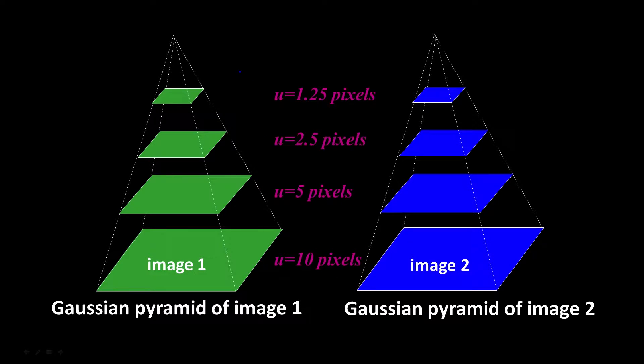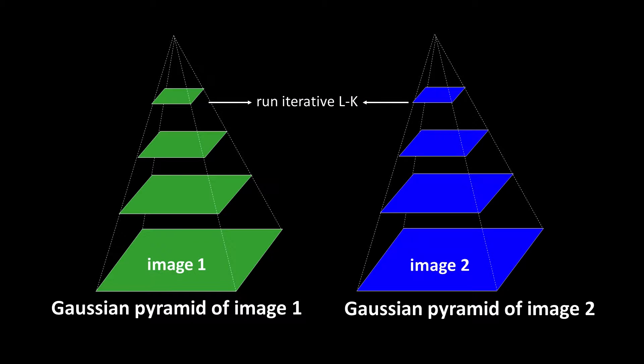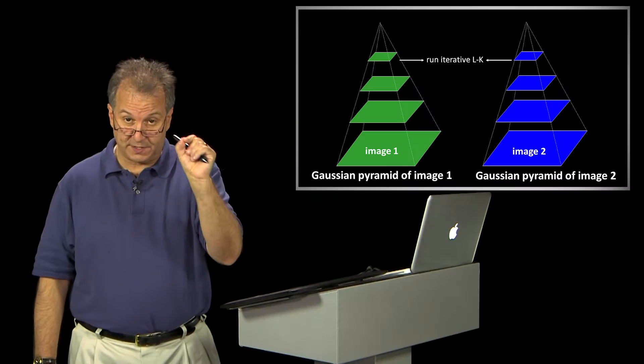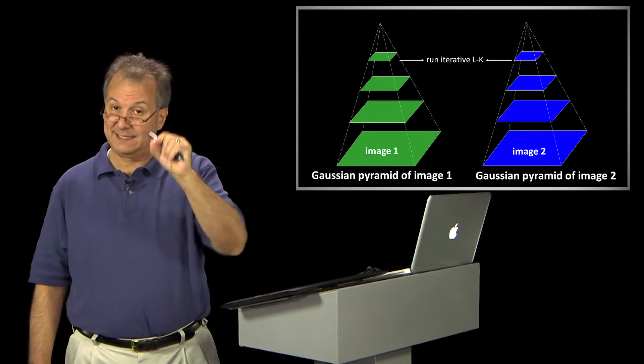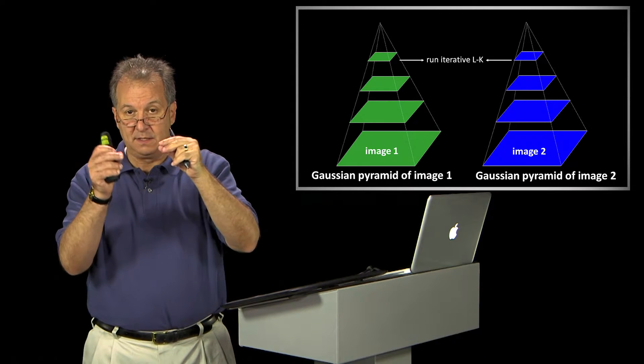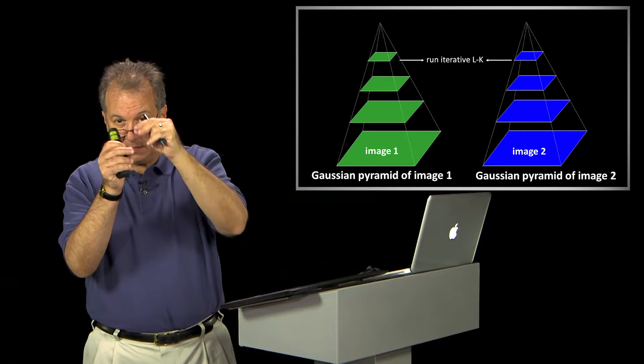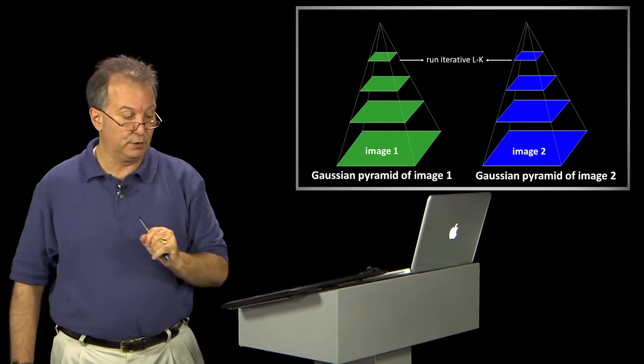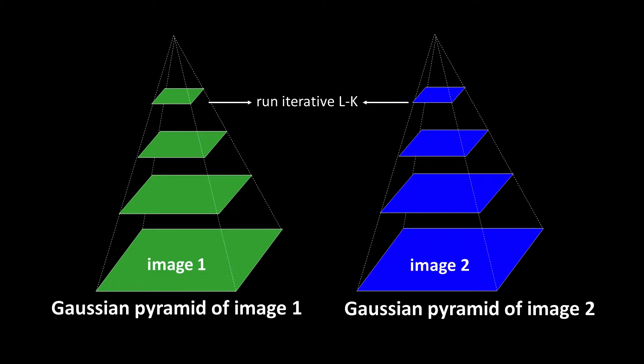So because I've reduced the amount of motion, I can first run Lucas-Kanade between those coarsest levels. And I might do the iterative thing. That's the thing we looked at last time where I fit a plane, estimate it, shift it a little bit, estimate it, shift it a little bit, keep doing it until I converge. So that will map the motion between the very reduced image one and the very reduced image two. So I can compare that. I can find the motion between them. The question then is, what do I do next?